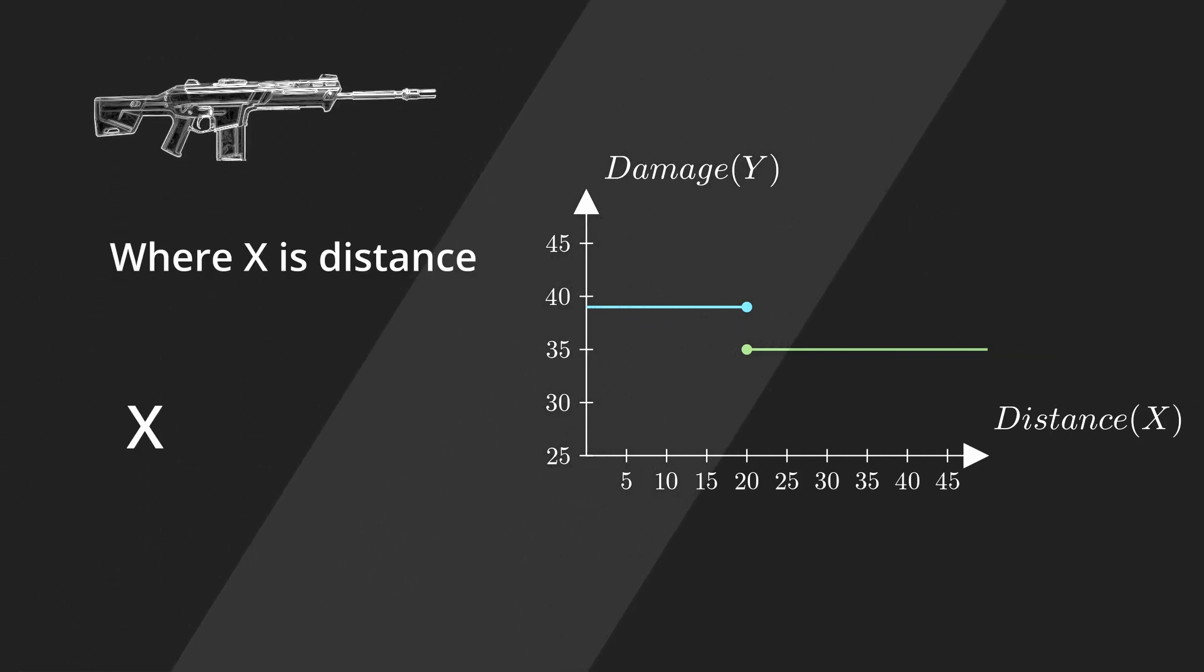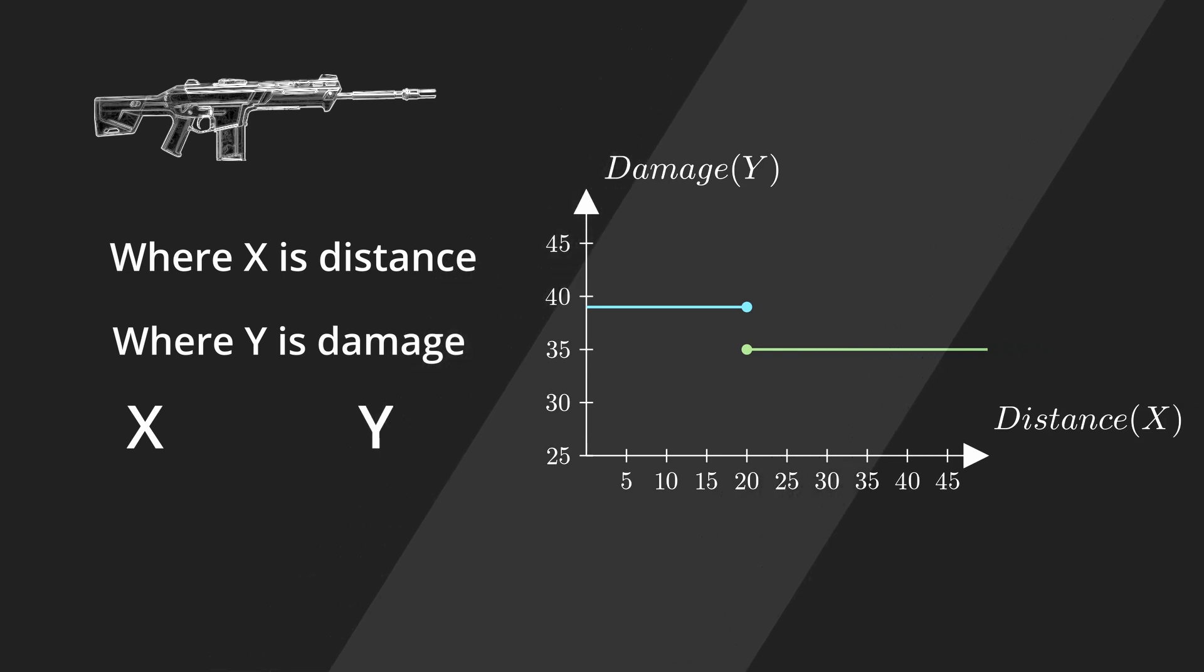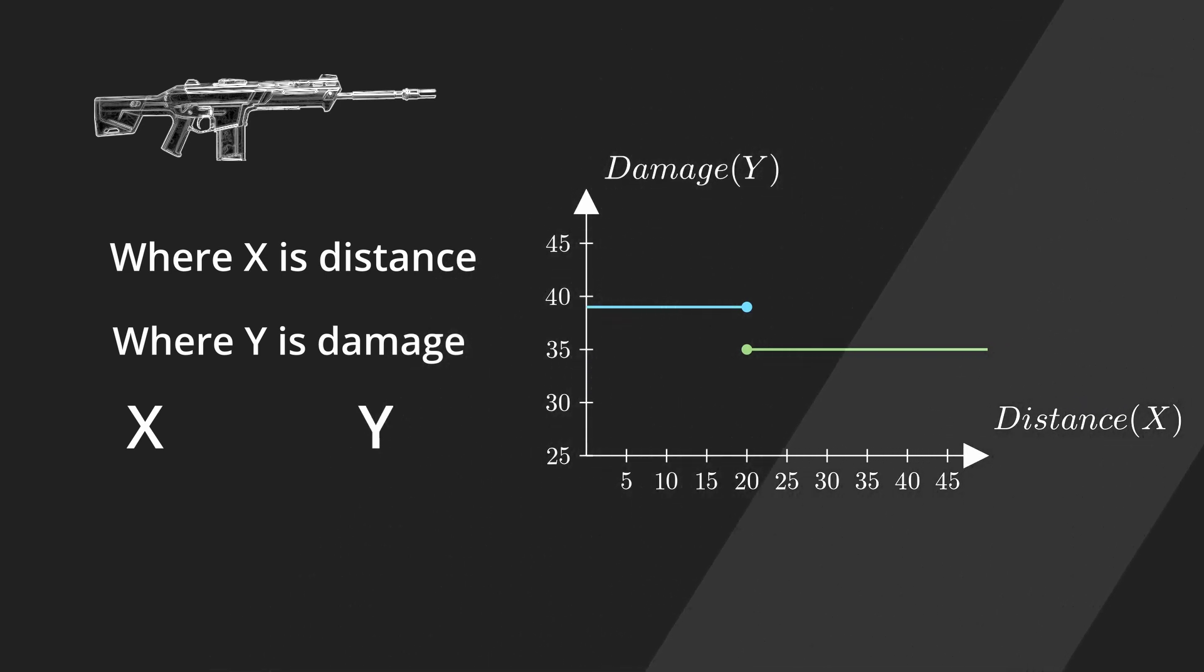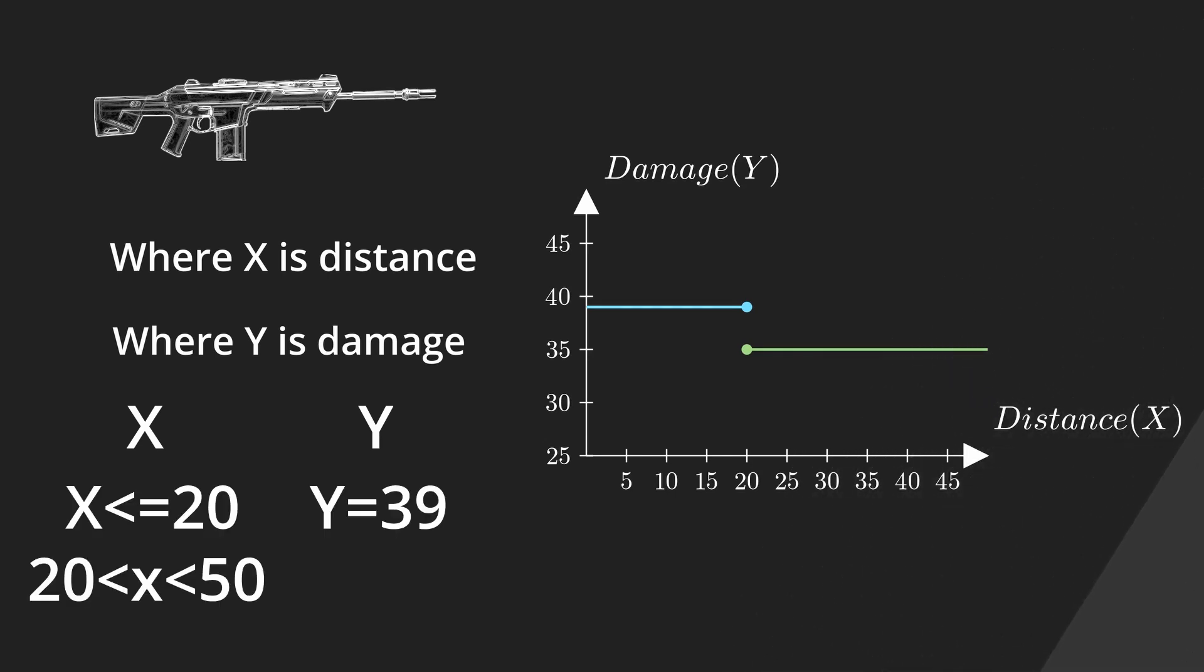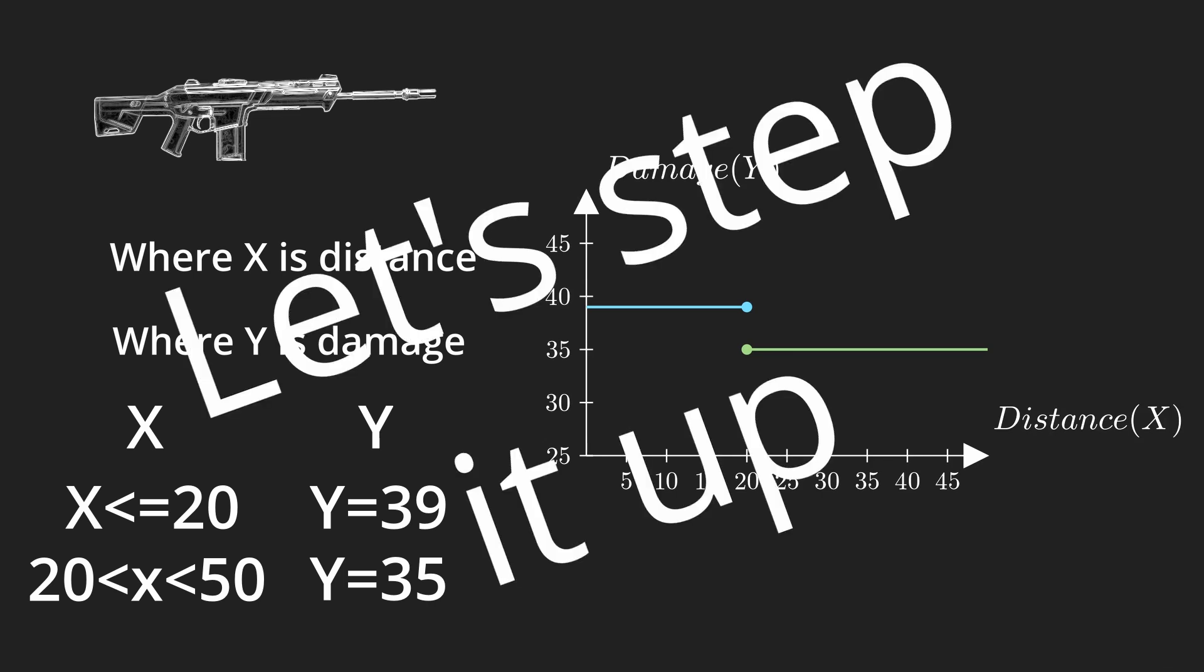First, we define our inputs and outputs, this will be X and Y. The equation for this gun will look something like this. Between 0 and 20 meters it does 39 damage, between 20 and 50 meters it does 35 damage. Nothing too complex, let's step it up.